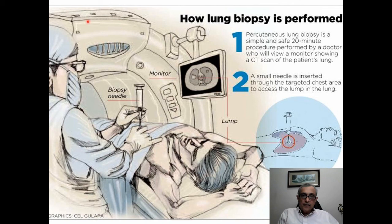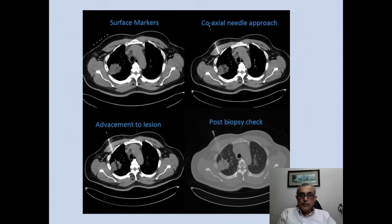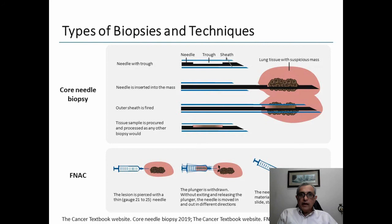In the CT scanner, the patient lies in the scanner with an image on the monitor, and the radiologist inserts a needle to get a tissue specimen. Here is how the images look: on the CT scan, you can see the mass, and a needle has been inserted through the chest wall coming close to the tumor from which a biopsy is taken.